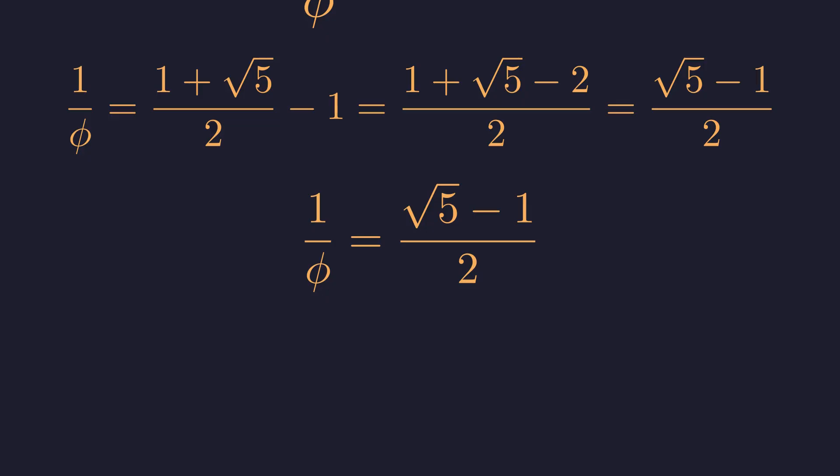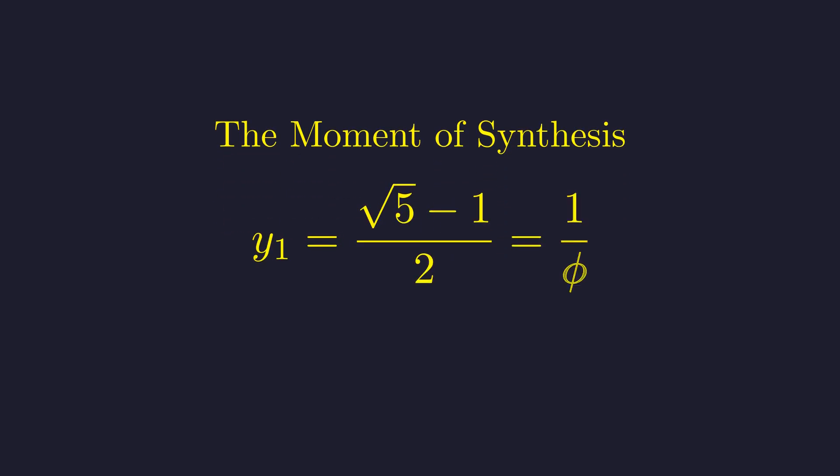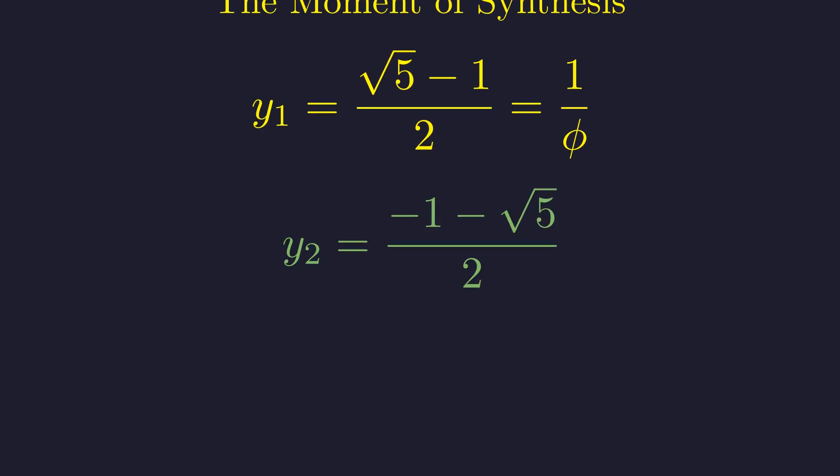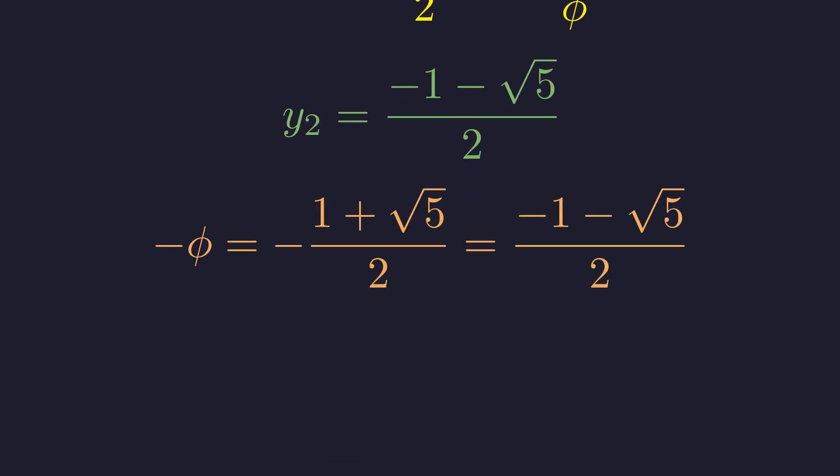So 1 over phi equals the square root of 5 minus 1 over 2. Now, wait a minute. That number, wait, we have seen that exact expression before. Rewriting y1 by changing the order of terms reveals the connection clearly. The algebraic structure of our fifth roots is governed by the golden ratio. This isn't a coincidence. It's the heart of the discovery. But what about the other solution? The positive solution, y1, is exactly the reciprocal of the golden ratio. Now for its counterpart. Our second solution was negative 1 minus the square root of 5 over 2. This is precisely negative phi. The two algebraic constants are not random numbers. They are 1 over phi and negative phi. The entire algebraic structure is governed by the golden ratio. But how does this connect back to our geometric picture?